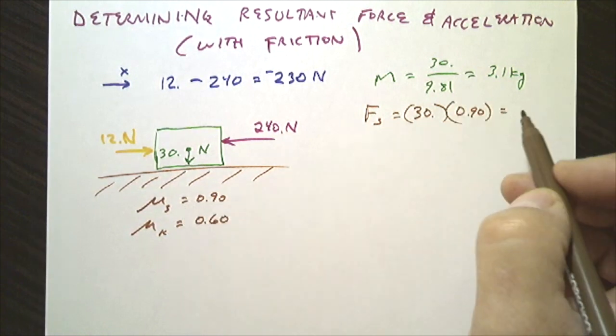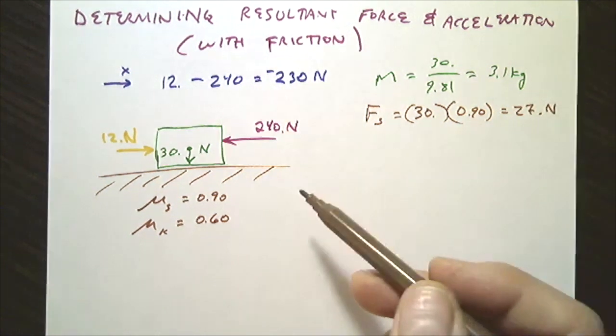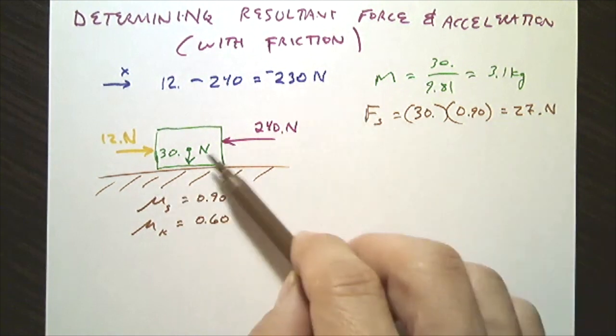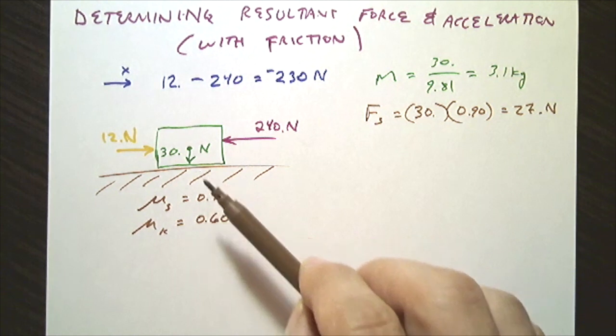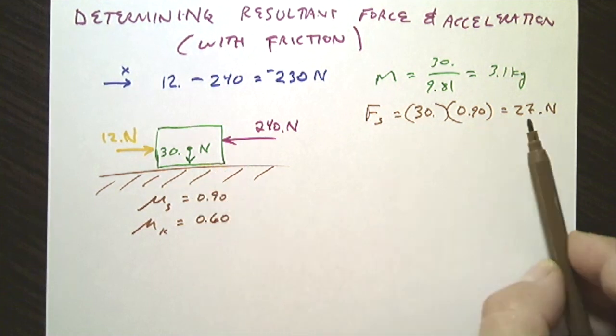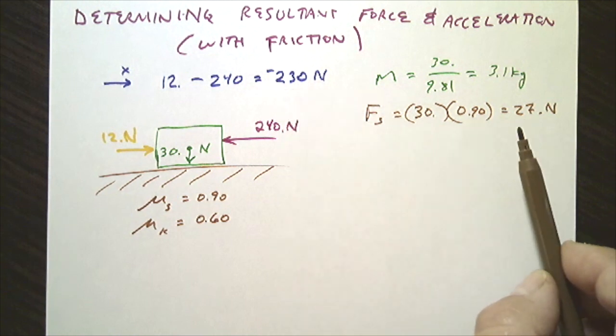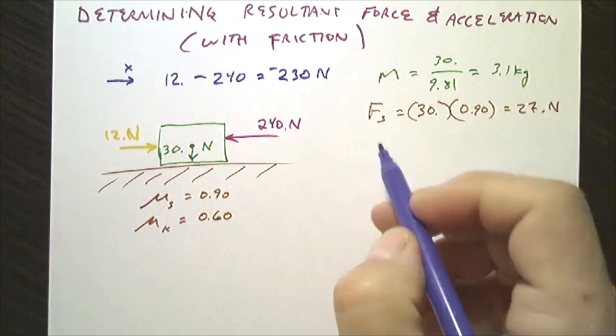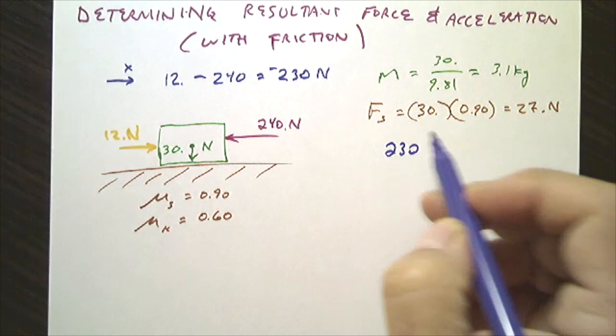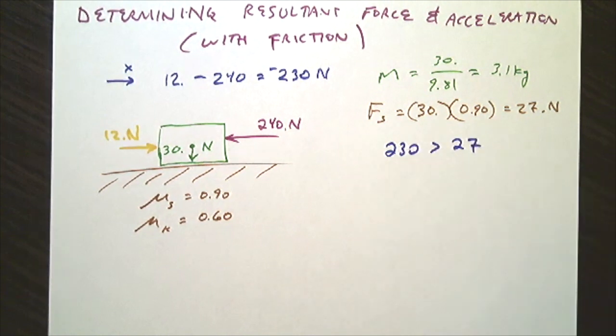So if I were to apply a force that is smaller than this, the net force is smaller than 27, it would not move. The resultant force would be 0, and the resultant acceleration would be 0, if this resultant force here were smaller than the static friction force. But in this case, the resultant force is 230, 230 in the left direction, and that is greater than 27, so it does move.